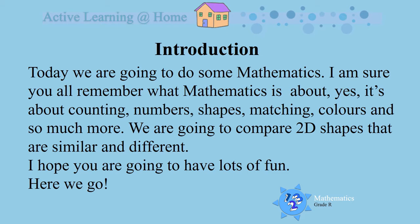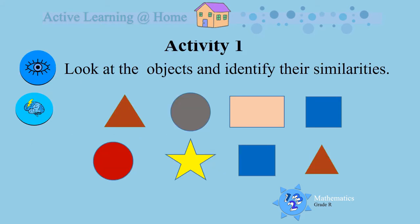So here we go! Activity 1: Look at the objects and identify their similarities. I see triangles and circles, a rectangle, a star and squares. Can you identify their similarities? Look carefully.